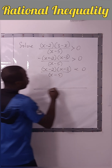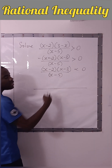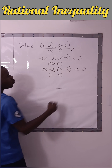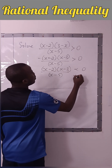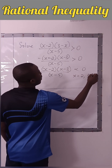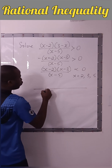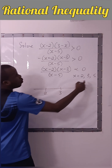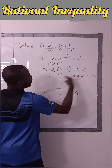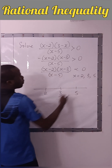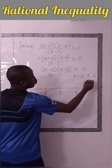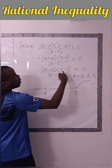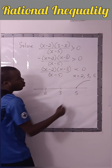Using the wavy curve method, we bring in the critical points. If you equate each of these factors to zero, you will have x equals two, three, and five. So we write two, three, and five on the number line, noting that x cannot be zero at these points. We start from the top right since the powers are all odd.